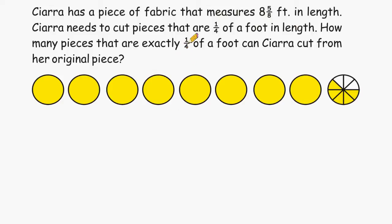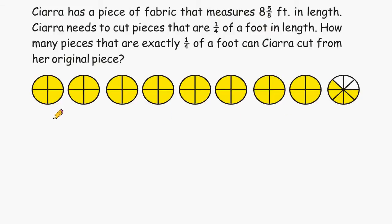And what we're trying to do is figure out how many pieces that are exactly 1/4 of a foot can we pull out of this entire length fabric. So what we're going to do is divide all of these whole circles into quarters. Now that we have divided them all into quarters, all we have to do is count and see how many quarters we have altogether.